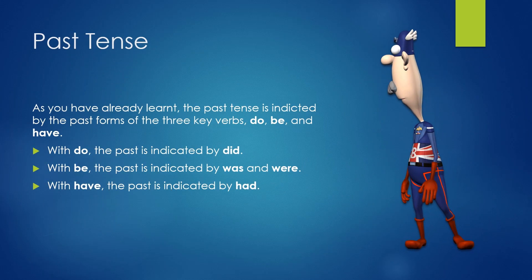Past Tense. As you have already learnt, the past tense is indicated by the past forms of the three key verbs: do, be, and have. With do, the past is indicated by did. With be, the past is indicated by was and were. With have, the past is indicated by had.